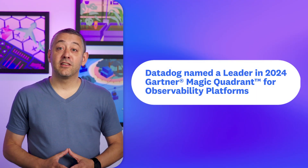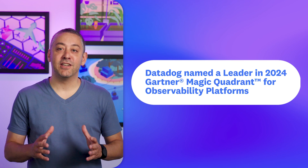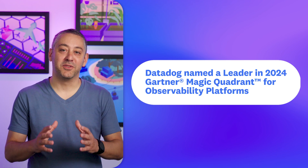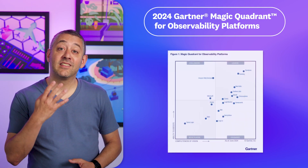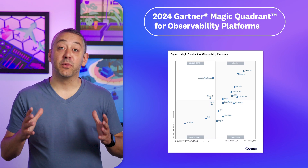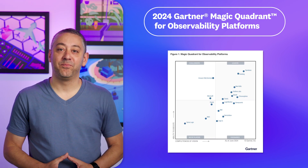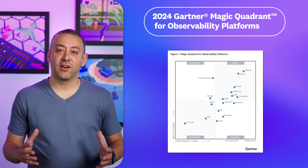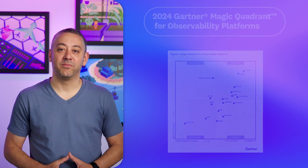Before we go, we have a quick announcement for you. Datadog has been named a leader in the 2024 Gartner Magic Quadrant for observability platforms. This is the fourth consecutive year Datadog has received this distinction, and we could not be more proud of our team. You can learn more by checking out our blog post, which we'll link to in the video description.